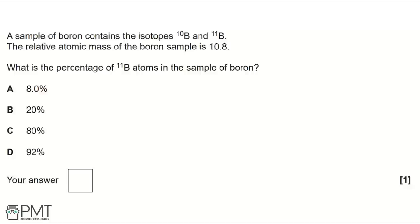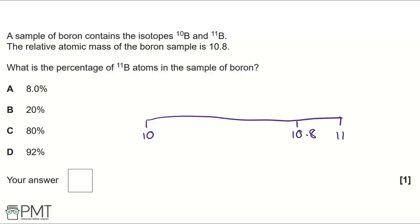If we imagine this like a number line, the relative atomic mass will fall somewhere between 10 and 11, depending on the percentages of ¹⁰B and ¹¹B. The relative atomic mass of the boron sample is 10.8, so it's more towards the 11 on our number line. Therefore, it's going to have a higher percentage of ¹¹B atoms in the boron sample. It would be 80% of ¹¹B and 20% of ¹⁰B.